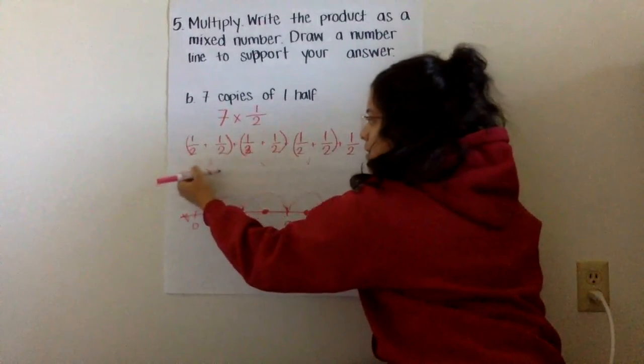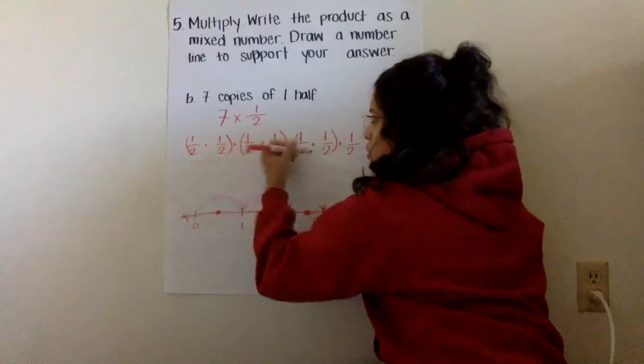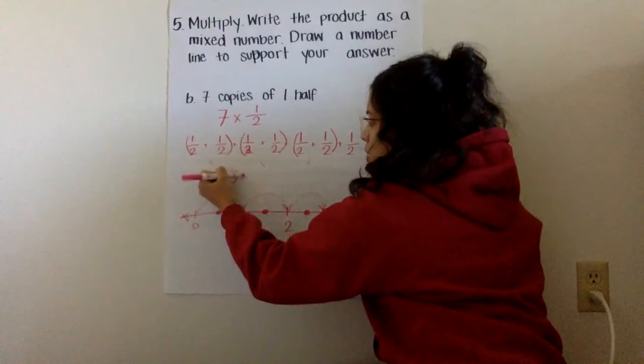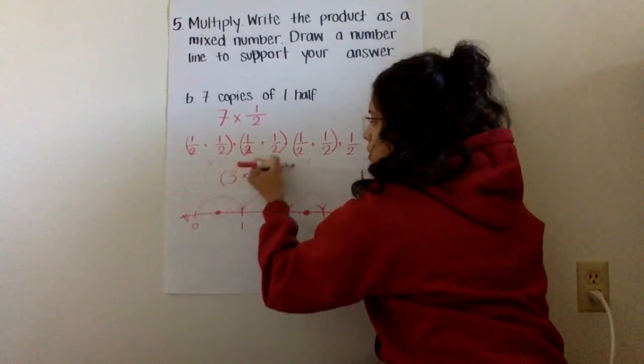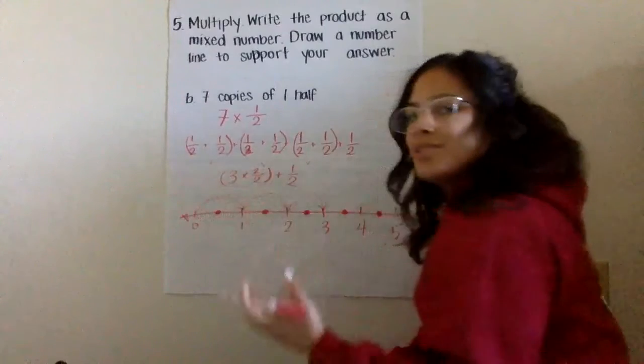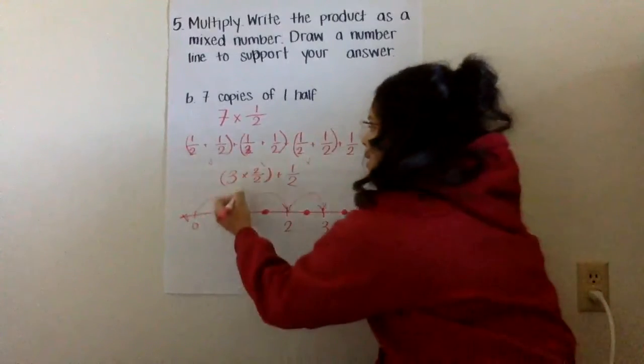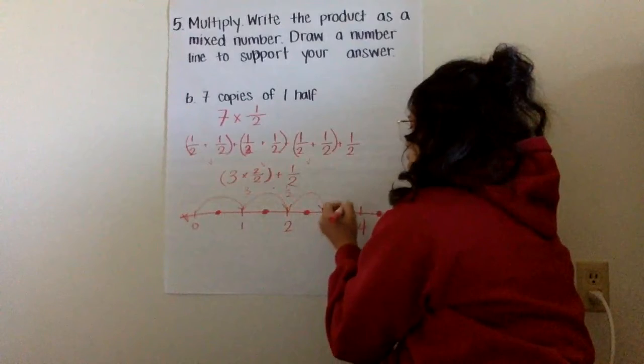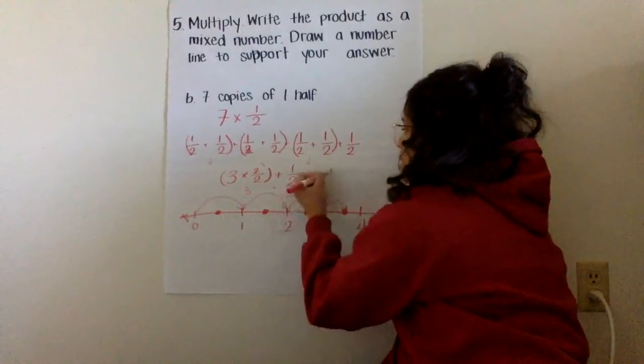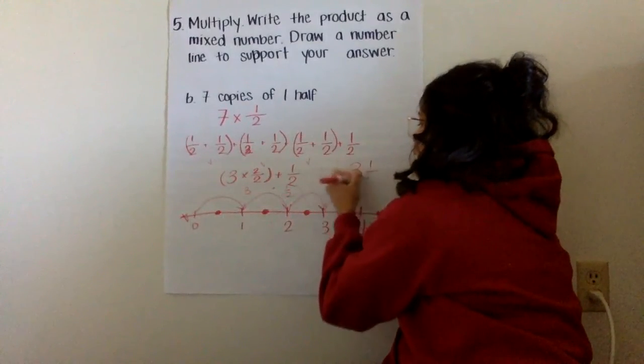Seven times one half is the same as doing one, two, three times two halves plus one half. Three times two halves is three. Then I have that one half remaining to get me a product of three and a half.